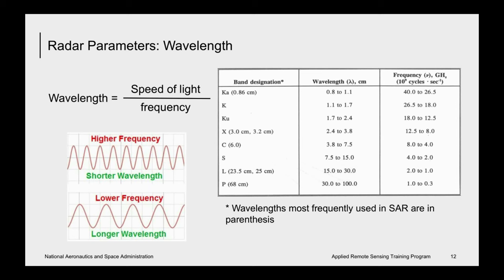Each band has a wavelength and frequency range. For example, when someone talks about a specific L-band radar such as SMAP — the Soil Moisture Active Passive satellite — SMAP has a radar operating at a specific frequency within the L-band range, in this case 1.26 gigahertz. Note the variation in wavelength: Ka band is on the order of 0.8 to 1 centimeters, while P band is on the order of 30 to 100 centimeters — quite a large range.